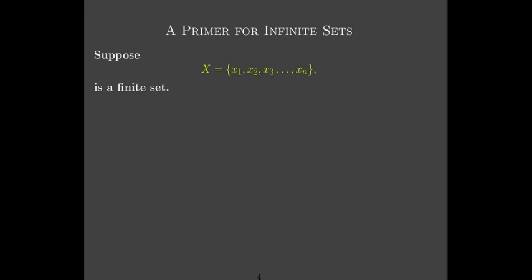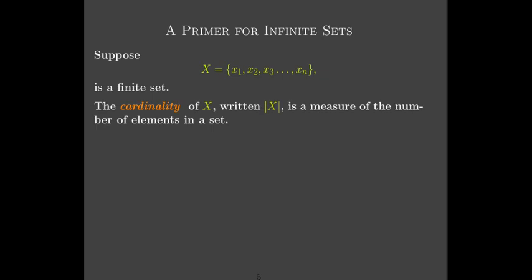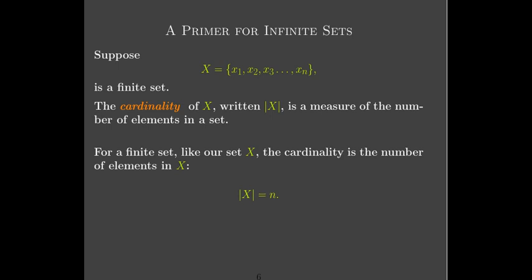Suppose now I have a finite set. Let's start by talking about finite sets. We're going to define the cardinality. We write the cardinality of a set x by putting absolute value signs, or those bars, around x. That tells us how many elements are in the set. For a finite set, there's no mystery — it's the number of elements in the set. So the cardinality of a set with n elements is n.